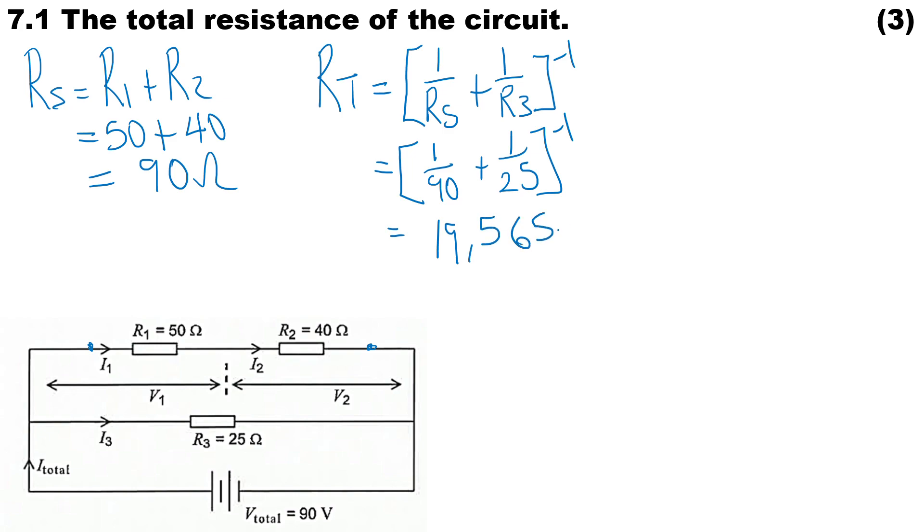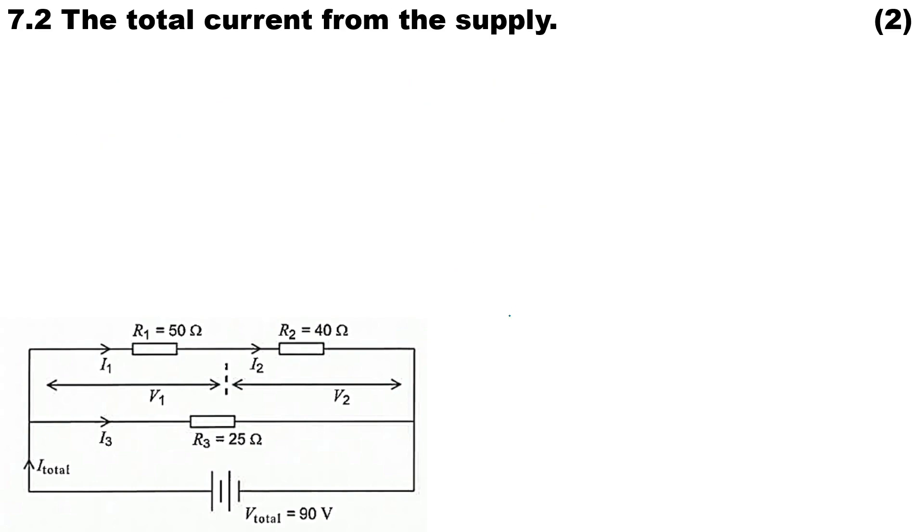Question 7.2: Calculate the total current from the supply. Nice and easy, we use Ohm's law here. This pyramid helps us a lot - I is directly proportional to V, inversely proportional to R. So therefore I_total equals V_total over R_total. The total voltage is 90, over the resistance total from the previous slide, 19.565. Therefore the total current is 4.6 amps. Try to remember that figure because we need it for the next question.